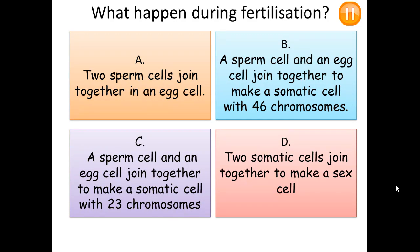Here is a question for you: what happens during fertilization? There are four options — please pause the video, go through all of them, and pick the right answer. The correct answer is B: during fertilization, a sperm cell and an egg cell join together to make a somatic cell with 46 chromosomes.